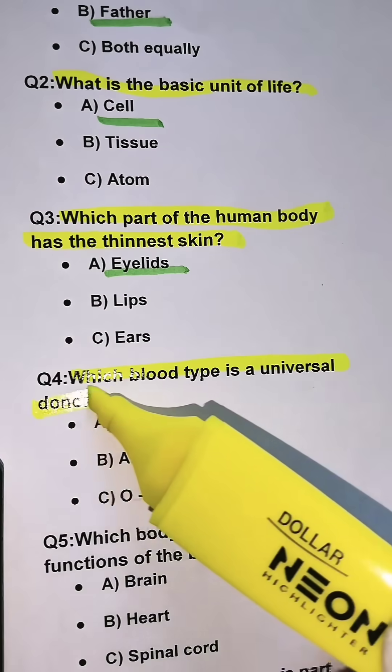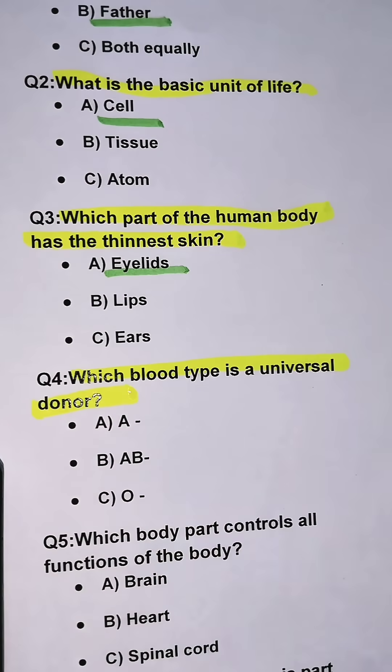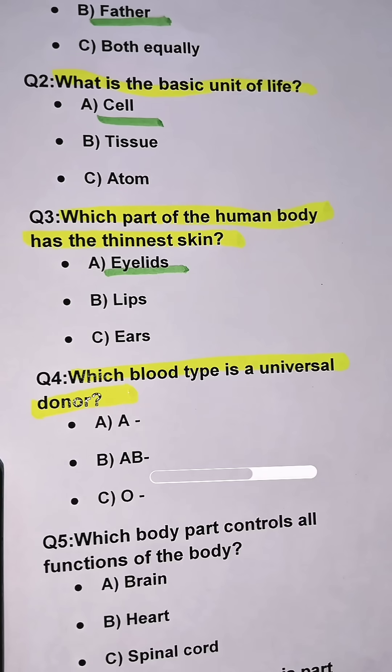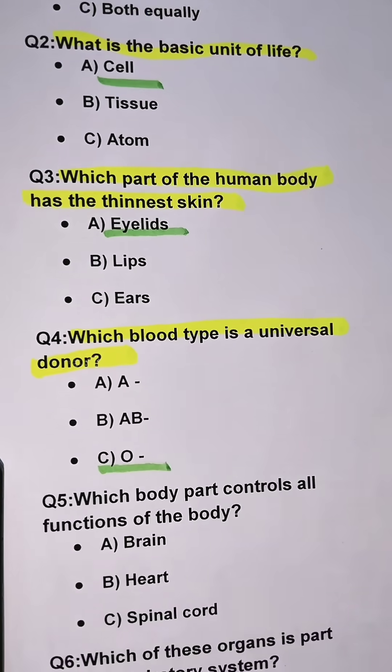Question 4. Which blood type is a universal donor? Option C. O.